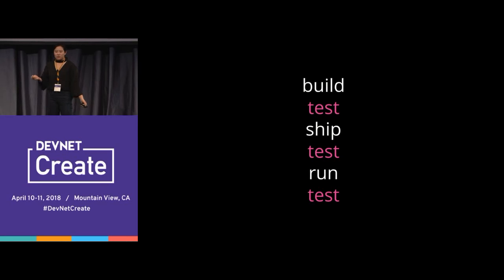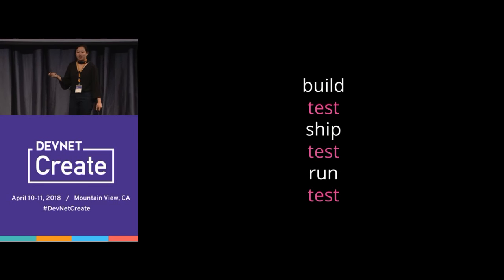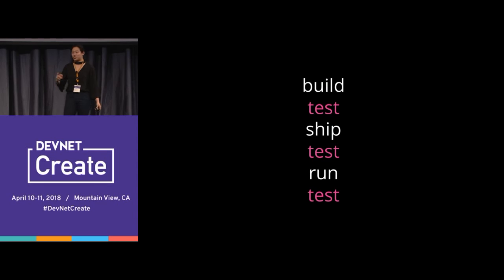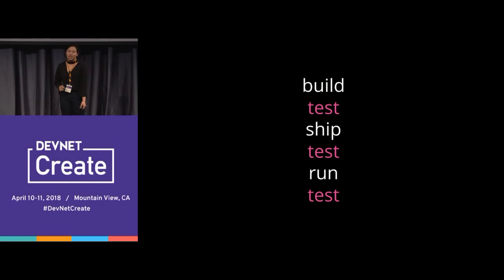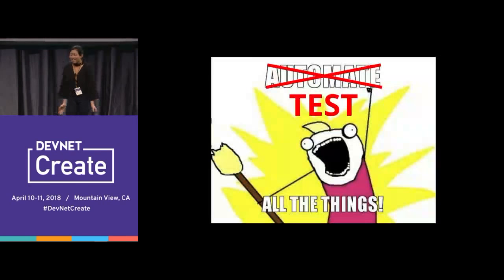So what do you do? How do you build, ship, and run a network? Well, you test it. After you build the network, you test it. After you ship it and move it to production, you test it. After you upgrade it, you test it. Test all the things. It's not about automating all the things, because all the things change — your vendors, protocols, and technologies will constantly change. But you know what your network is supposed to do. Test everything.